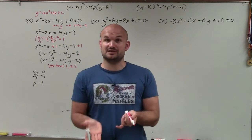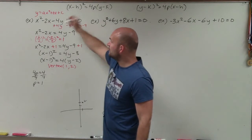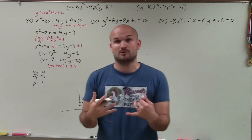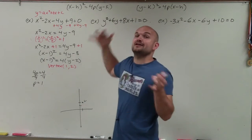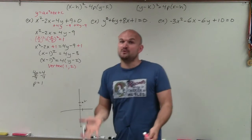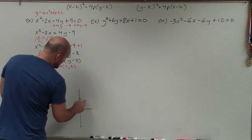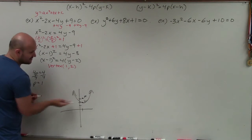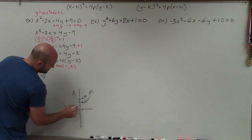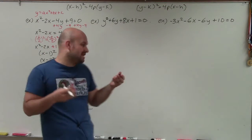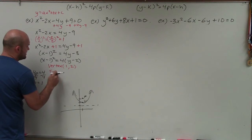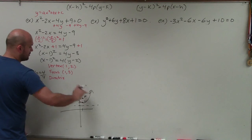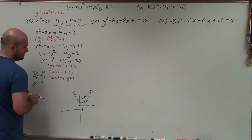Since p is positive and x is squared, the parabola opens up or down. Because p is positive, the focus is above the vertex — I go up 1 unit. The directrix is the opposite of p, a line perpendicular to the axis of symmetry, so it goes 1 unit below the vertex. By plotting all this, I can label: the focus is (1, 3), and the directrix is the horizontal line y = 1.